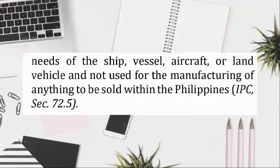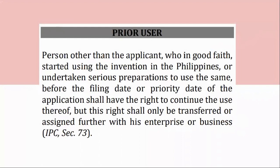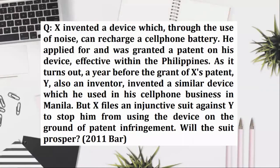Prior user: a person other than the applicant, who in good faith, started using the invention in the Philippines, or undertaken serious preparations to use the same, before the filing date or priority date of the application, shall have the right to continue the use thereof, but this right shall only be transferred or assigned further with his enterprise or business. IPC, Section 73. Question: X invented a device which, through the use of noise, can recharge a cell phone battery. He applied for and was granted a patent on his device, effective within the Philippines. As it turns out, a year before the grant of X's patent, Y, also an inventor, invented a similar device which he used in his cell phone business in Manila. But X files an injunctive suit against Y to stop him from using the device on the ground of patent infringement. Will the suit prosper? (2011 bar) No, since Y is a prior user in good faith.